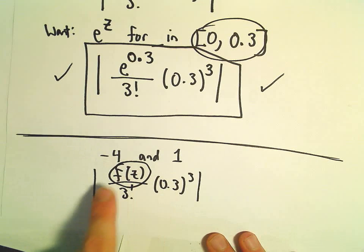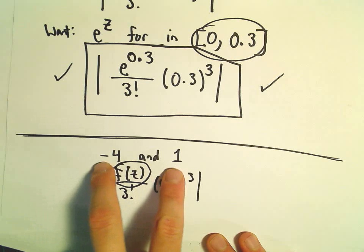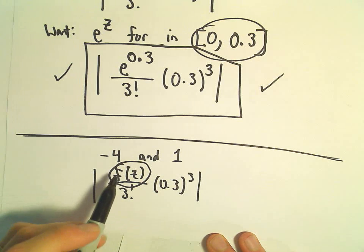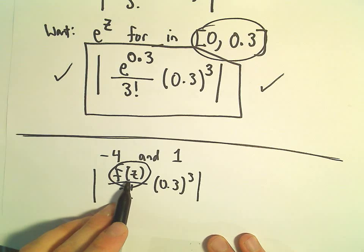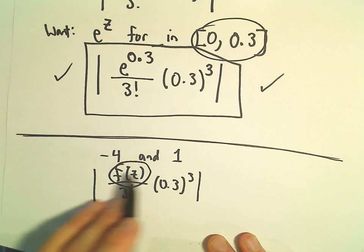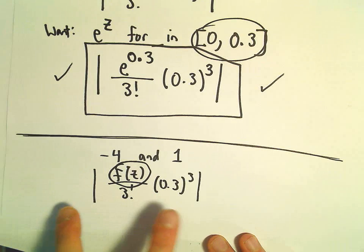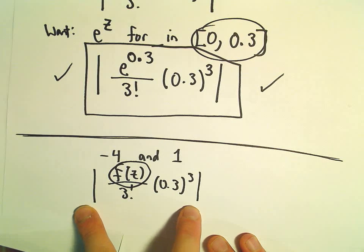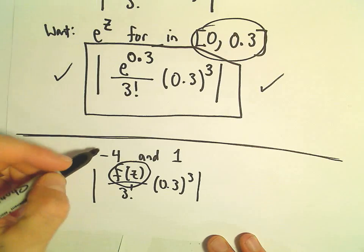So I need to be careful when I say as large as possible because we're taking the absolute value of the numbers. So really, if our function f of z took on values between negative 4 and 1, we wouldn't plug 1 in.